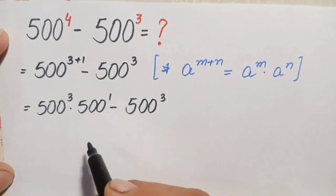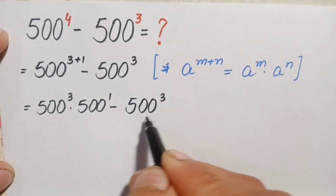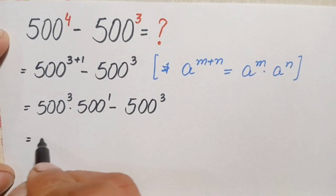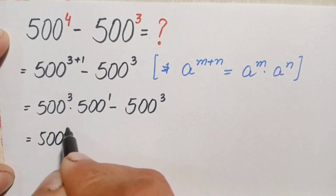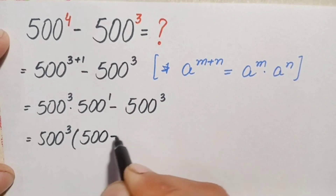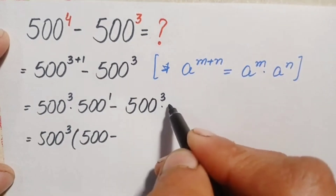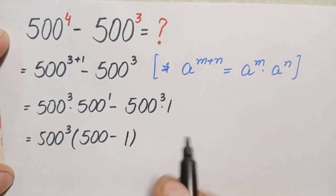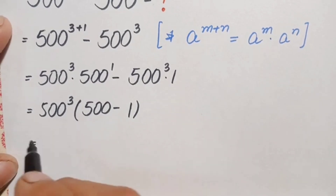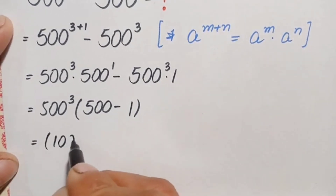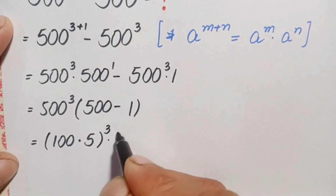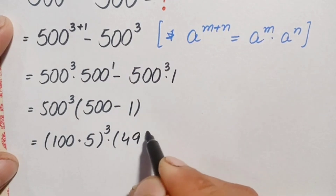Looking at both terms, 500 raised to power 3 (or 500 cubed) is common in both numbers, so we take it out as a common factor. This becomes 500 cubed times (500 minus 1). We can write 500 as 100 times 5, giving us (100 times 5) whole cubed times 499.